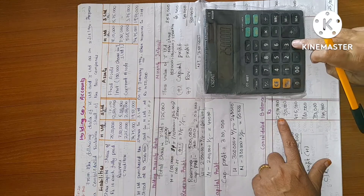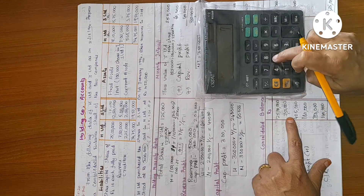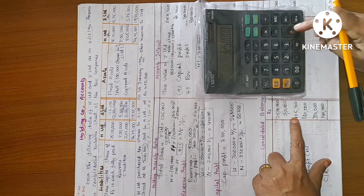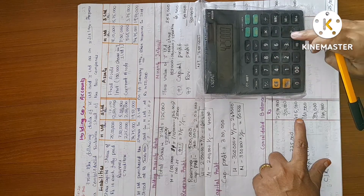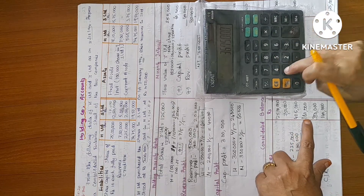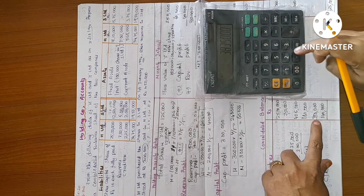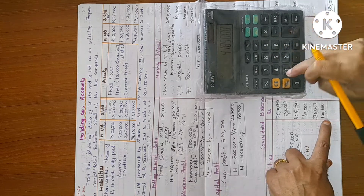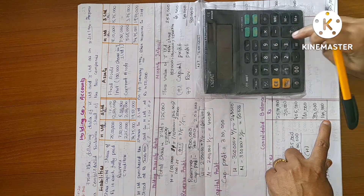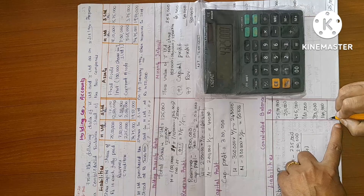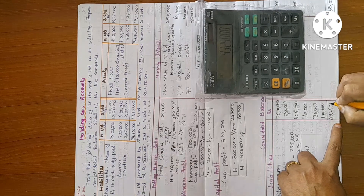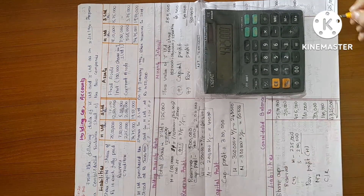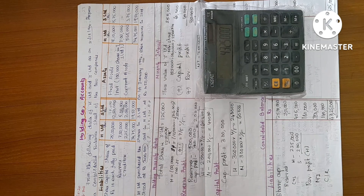Summary of consolidated balance sheet figures: share capital 25 lakh, reserves 7 lakh 50,000, creditors 4 lakh 25,000, revenue profit 1 lakh 60,000, minority interest 3 lakh 50,000, capital reserve 1 lakh 40,000 — total 43 lakh 25,000. Thank you for watching. Have a healthy day.